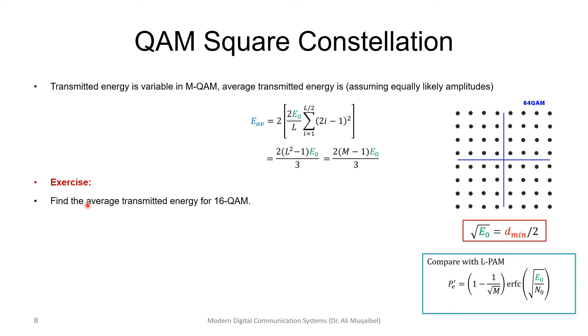If you open the bracket and do the summation, we can write this in terms of (2M - 1) times E naught, where capital M is the number of constellations. As an exercise, find the average transmitted energy for 16-QAM. The answer would be a function of D_min or E naught.